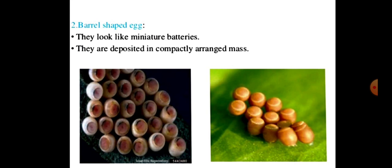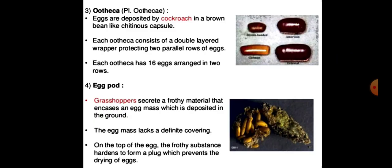These eggs look like miniature batteries. They are deposited in a compactly arranged mass of barrel-shaped eggs. There are two parallel rows of eggs, and each ootheca has sixteen eggs arranged in two rows.